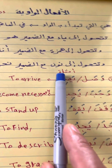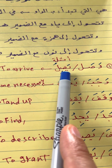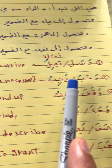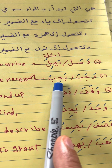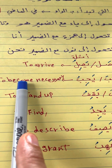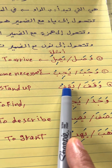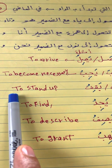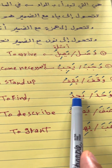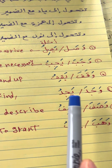Here are some examples: waasala (past) / yassil (present) — to arrive. Wajaba / yajib — to become necessary. Waqafa / yaqifu — to stand up or stop. Wajada / yajidu — to find. These show the past and present tense forms.